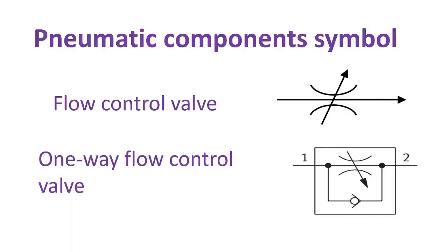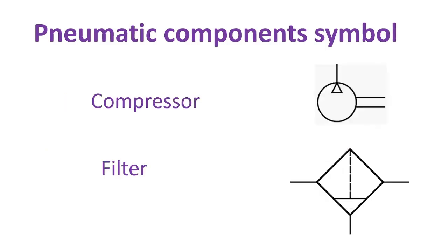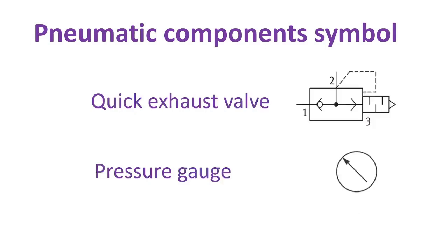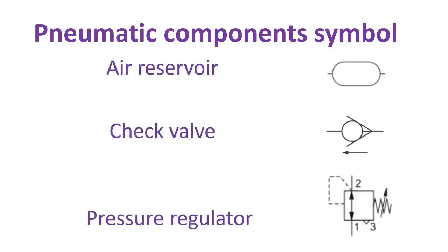Let's proceed with other pneumatic component symbols. This is the symbol of flow control valve. Next, the symbol of one-way flow control valve. The symbol of compressor. Symbol of filter. Symbol of quick exhaust valve. Symbol of pressure gauge. Symbol of air reservoir. Symbol of check valve. Symbol of pressure regulator.